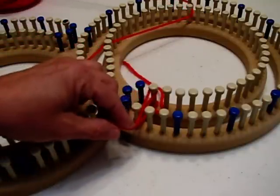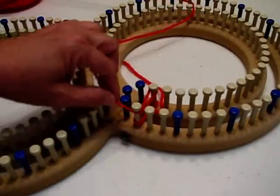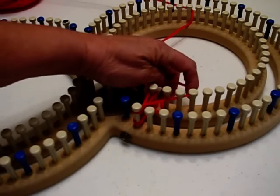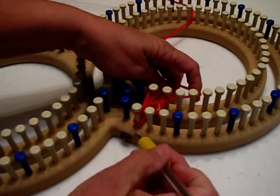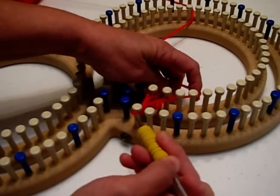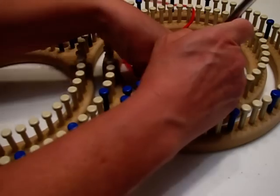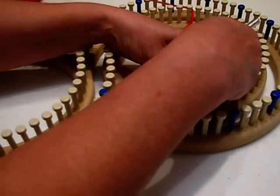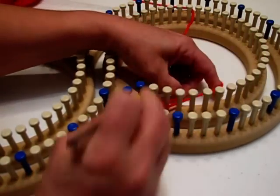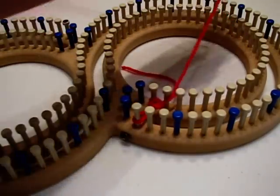Cross over in the middle and bring it around to the bottom peg and cross over. Now we're going to bring the bottom loop up and over the top loop, and we've cast on to our first pegs.